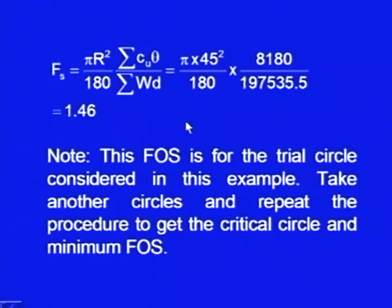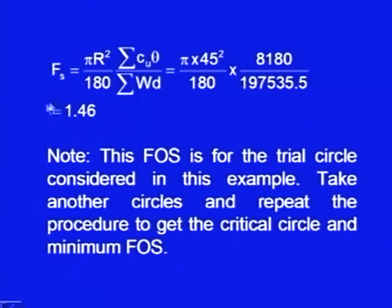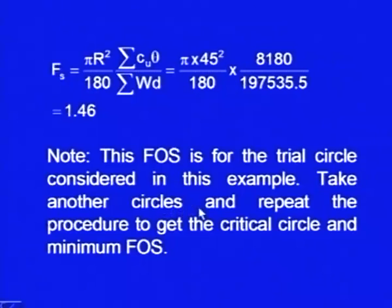Now finally, we keep these things in the equation: F_s = π · r² · Σ(C_u × θ) / (180 · Σ(W × D)). So π × 45² × 8180 / (180 × Σ(W × D)) gives F_s = 1.46. So we have completed this procedure for one trial circle. This factor of safety is for the trial circle considered in this example; we have to take other trial circles and repeat this entire procedure to get the critical circle, which has the minimum factor of safety.